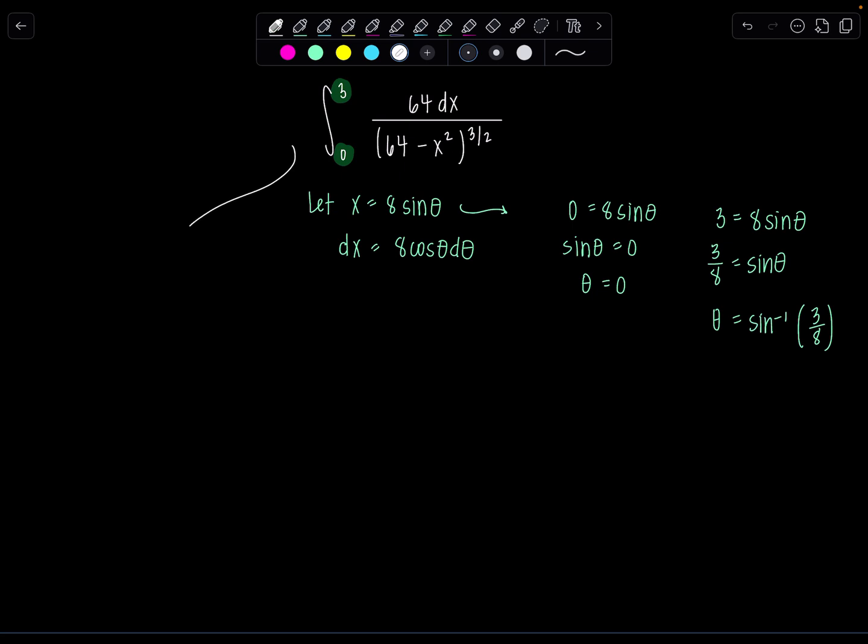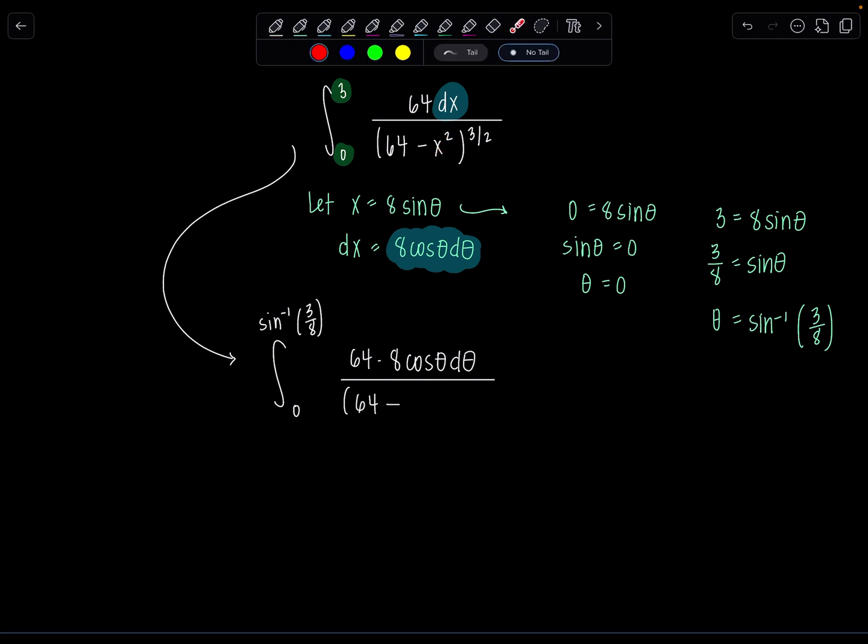So now let's rewrite our integral all in terms of theta. The limits are 0 to sine inverse of 3 eighths. We have 64, and then dx is all of this, 8 cosine theta d theta, over 64 minus, and then x squared is going to be 8 sine theta quantity squared. So it's going to become 64 sine squared theta, and then this is all raised to the 3 halves.